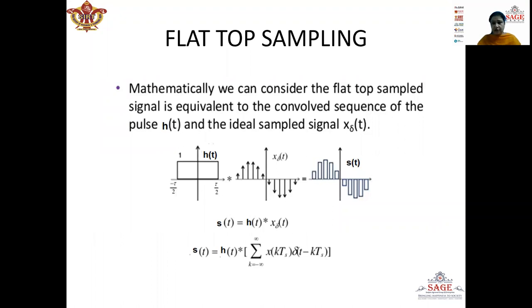Now we will consider the generation of the flat top sample signal. The flat top sample signal is generated by convolution of the instantaneous sample signal with the non-periodic gate pulse. Here we can see in the figure that h(t) is the non-periodic gate pulse and x_delta(t) is the instantaneous sample signal. Both these signals are shown in time domain. When we consider the convolution of these two signals, we will get a new signal s(t), which is the flat top sample signal.